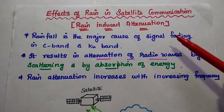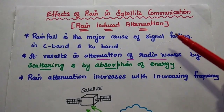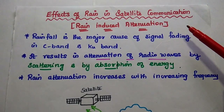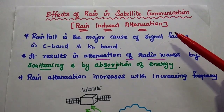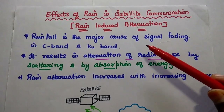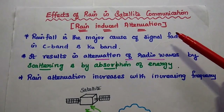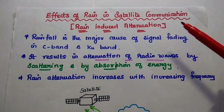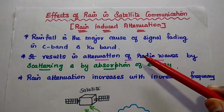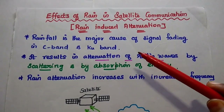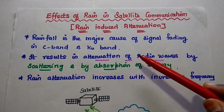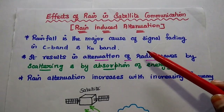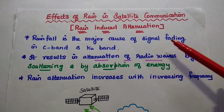We are going to discuss the effects of rain in satellite communication, also known as rain-induced attenuation. In the range of C band and KU band, rainfall becomes the major cause of signal fading.